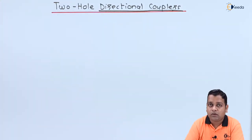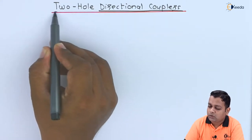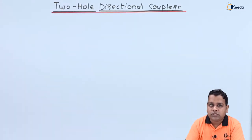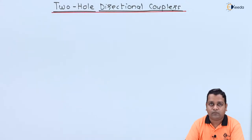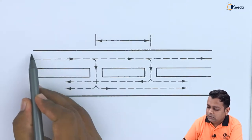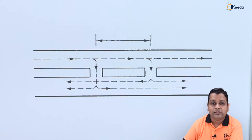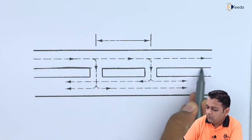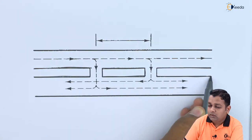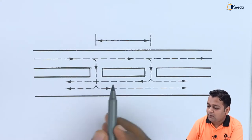To make the coupling between two separate waveguides, we need multiple holes at the common wall between the primary and secondary waveguide. In this case we use two holes, hence the name two-hole directional coupler. The bottom wall of the primary waveguide and the top wall of the secondary waveguide are discontinuous at two places — these are the two holes that allow energy coupling.